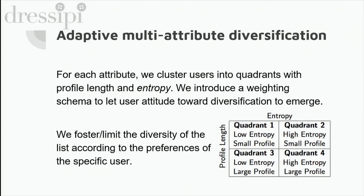Specifically, we looked at whether the user's choices are distributed across several values that an attribute can assume, or focused on just a few or even a single value. We then introduced a weighting schema to let user attitude towards diversification stand out, and we embedded this modeling into the objective function, so that we could foster or limit the diversity of the recommendation list according to the past behavior of each user.